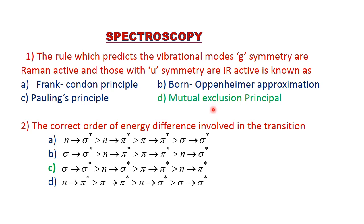Question number one: the correct order of the energy difference involved in the transition. The highest energy transition is sigma to sigma star, then n to sigma star, then pi to pi star, then n to pi star. C is the correct answer for this question.